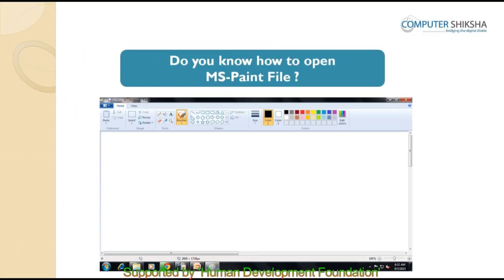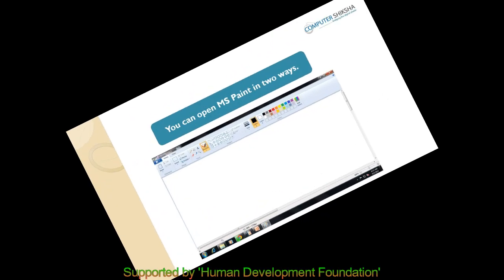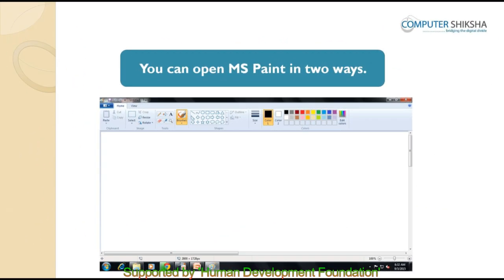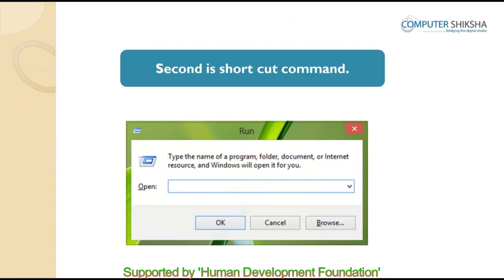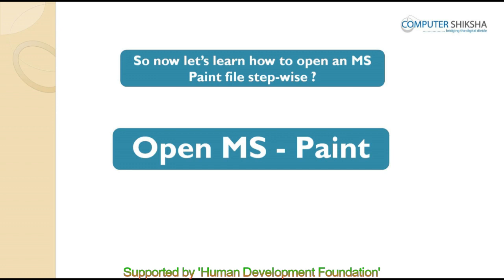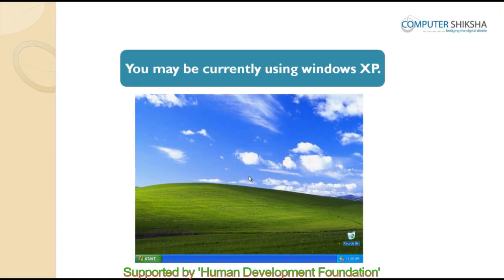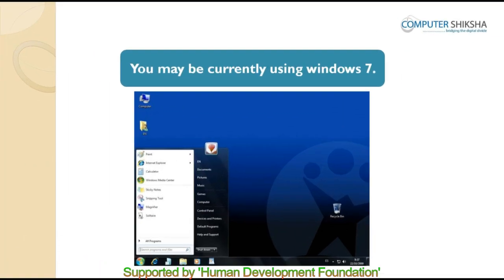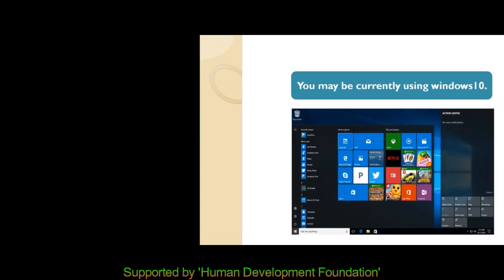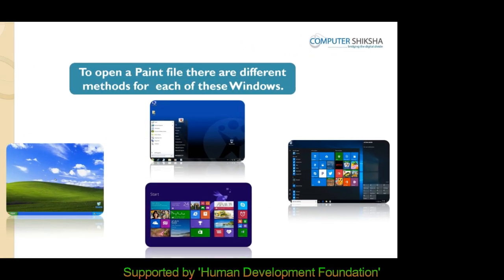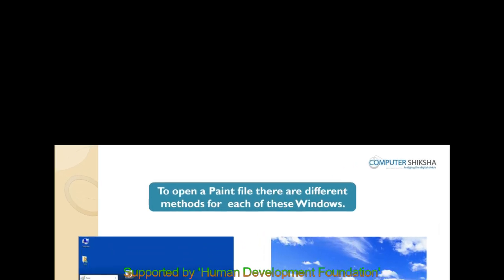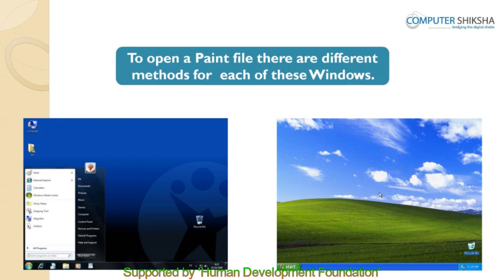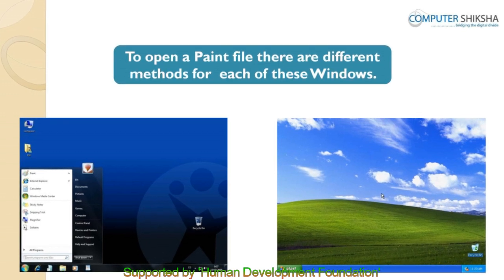Can you tell how do we open MS Paint files? You can open MS Paint in two ways. The first method is stepwise and the second is by using a shortcut. Right now, you will learn how to open an MS Paint file stepwise. You may be currently using Windows XP, Windows 7, Windows 8, or Windows 10, and there are different methods for each of these. We will learn how to open an MS Paint file in Windows XP or Windows 7.